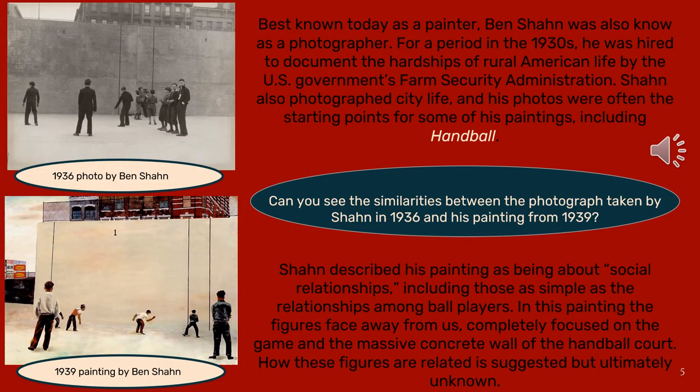Best known today as a painter, Ben Shahn was also known as a photographer. For a period in the 1930s, he was hired to document the hardships of rural American life by the US government's Farm Security Administration. Shahn also photographed city life, and his photos were often the starting points for some of his paintings, including Handball.